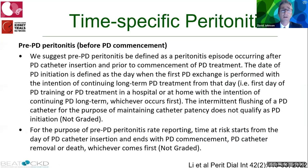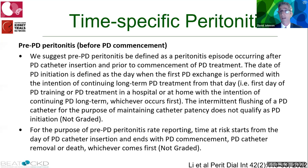Time-specific peritonitis has three categories. Pre-PD peritonitis occurs after catheter insertion but before PD commencement. Standard PD-related peritonitis occurs following commencement of peritoneal dialysis. Catheter-insertion-related peritonitis occurs within the first 30 days of catheter insertion, whether or not the patient has commenced peritoneal dialysis.